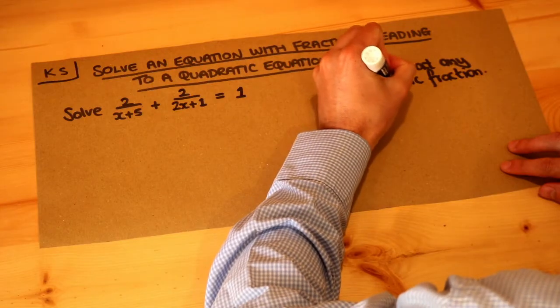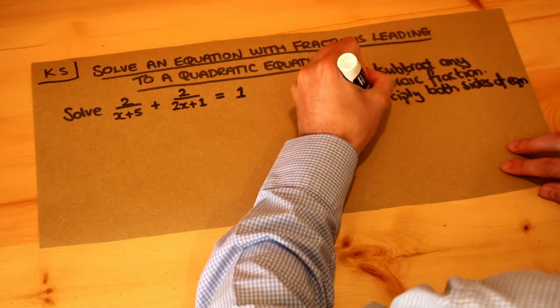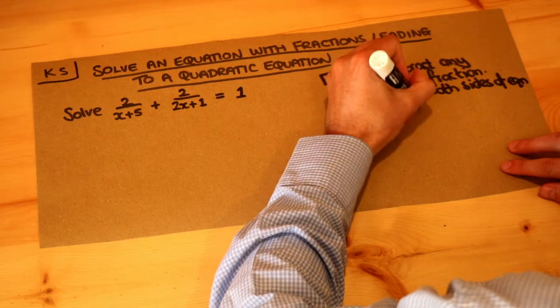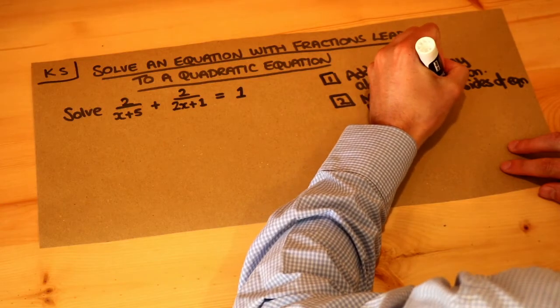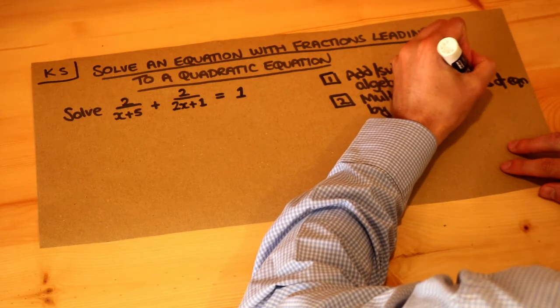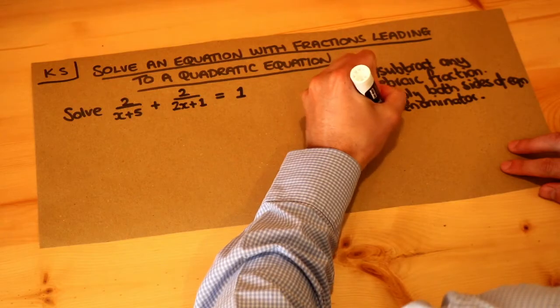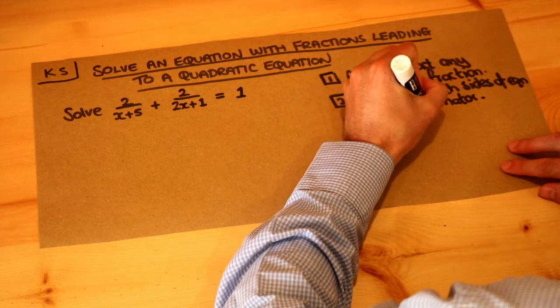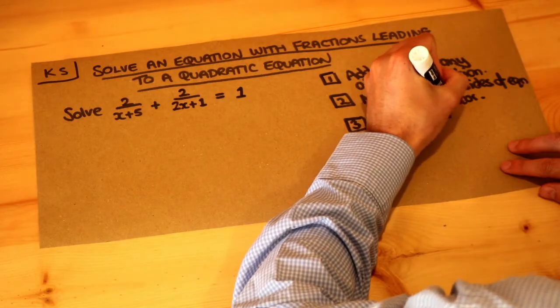Multiply both sides of the equation by the denominator of the fraction, and that will get rid of any fractions in your equation. Then you'll get a quadratic equation and you're going to solve that quadratic equation, probably by factorization.